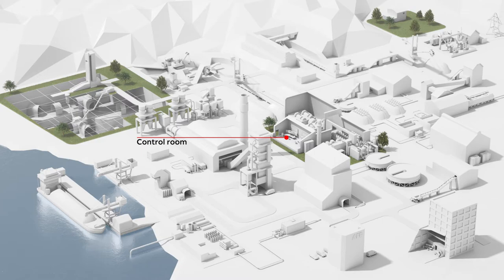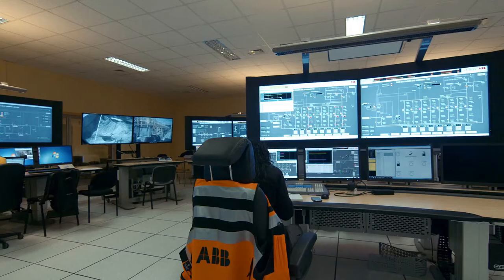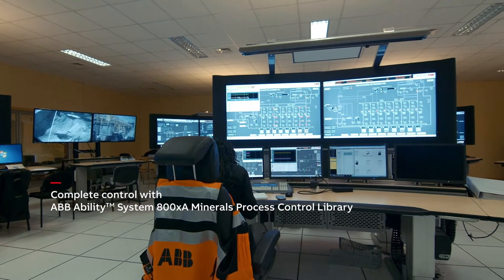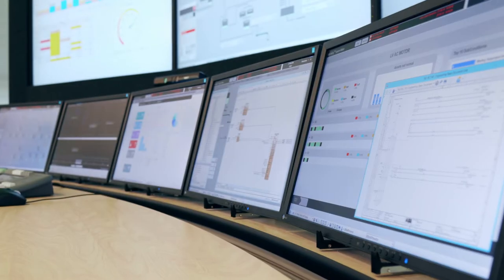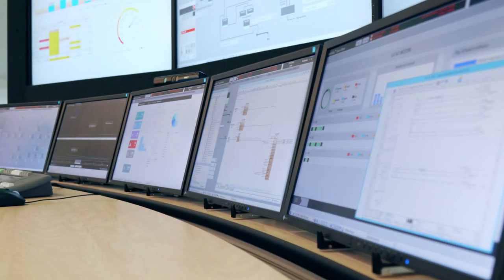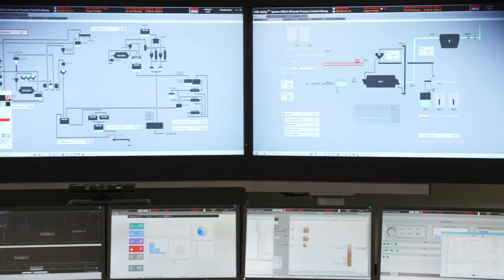The ABB Ability System 800XA Minerals Process Control Library is a tailor-made automation solution for the mining and cement industries. It's an extensive set of software models designed to achieve the highest plant productivity, availability and safety and the best operator efficiency. The control system is one of the essential components when it comes to digitalization of processing plants.